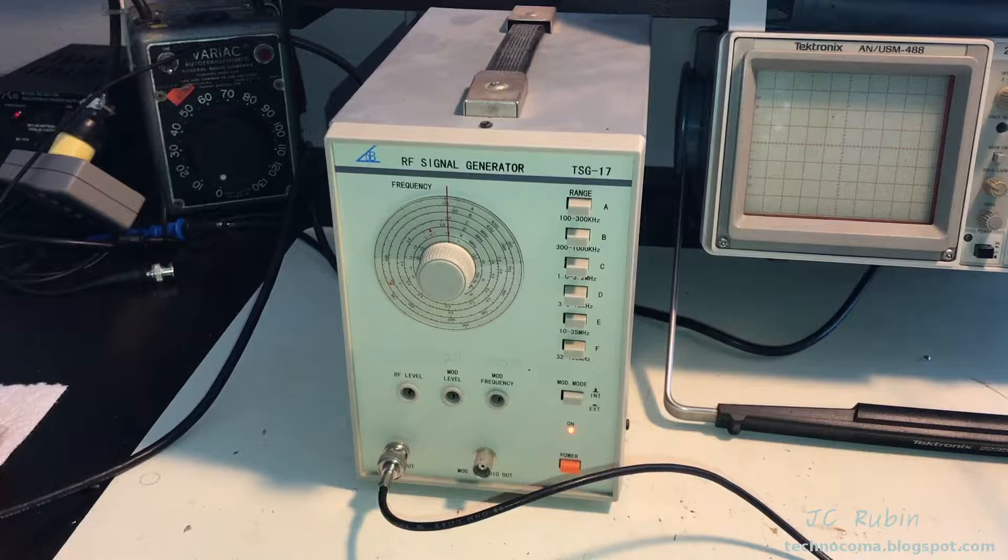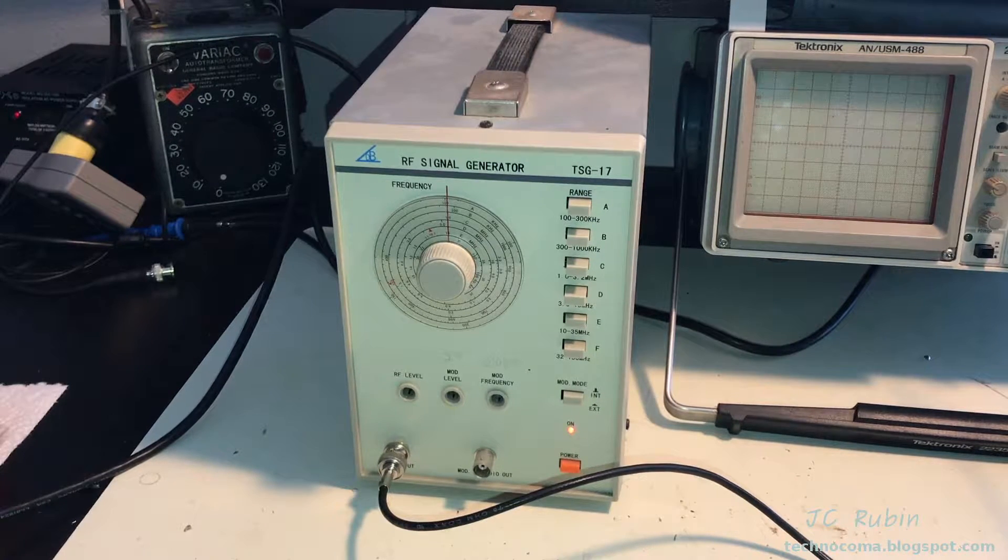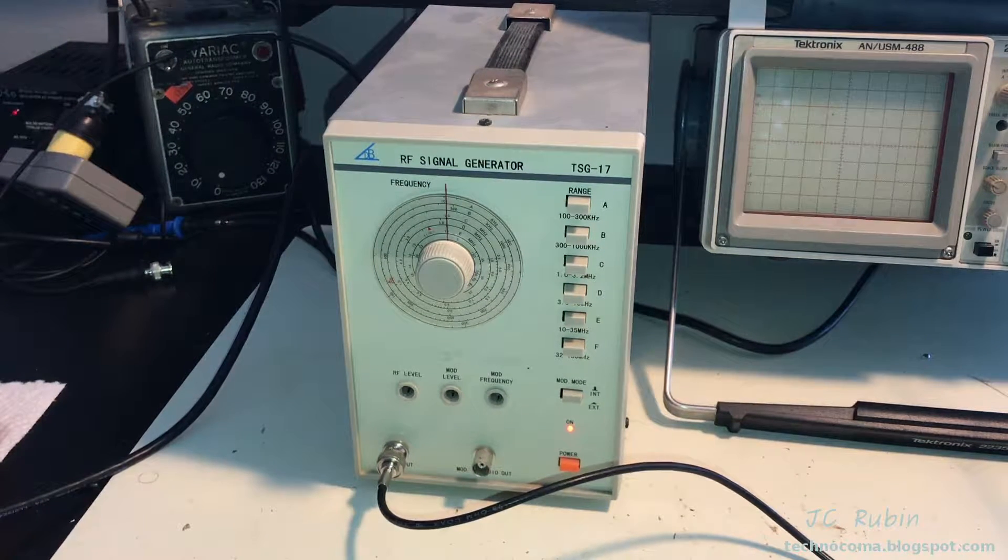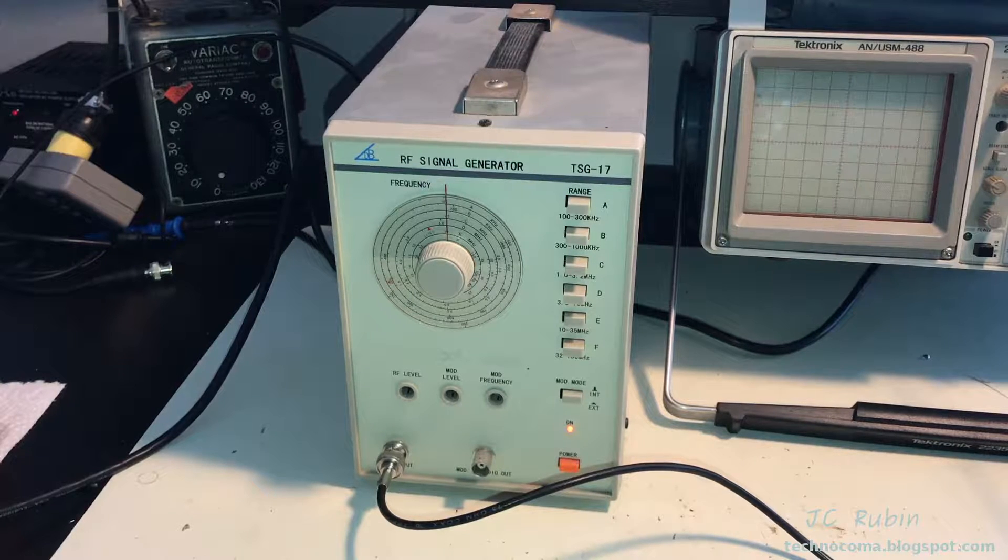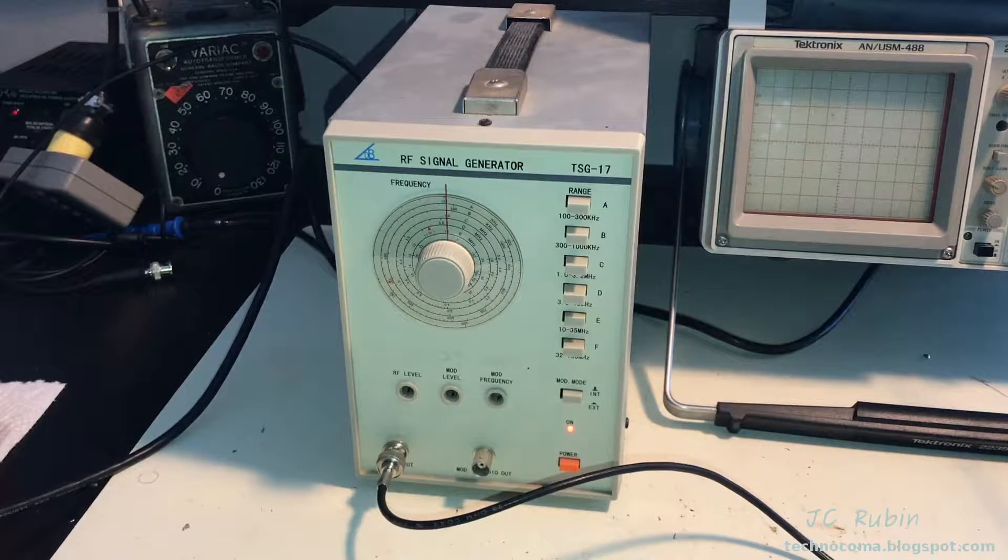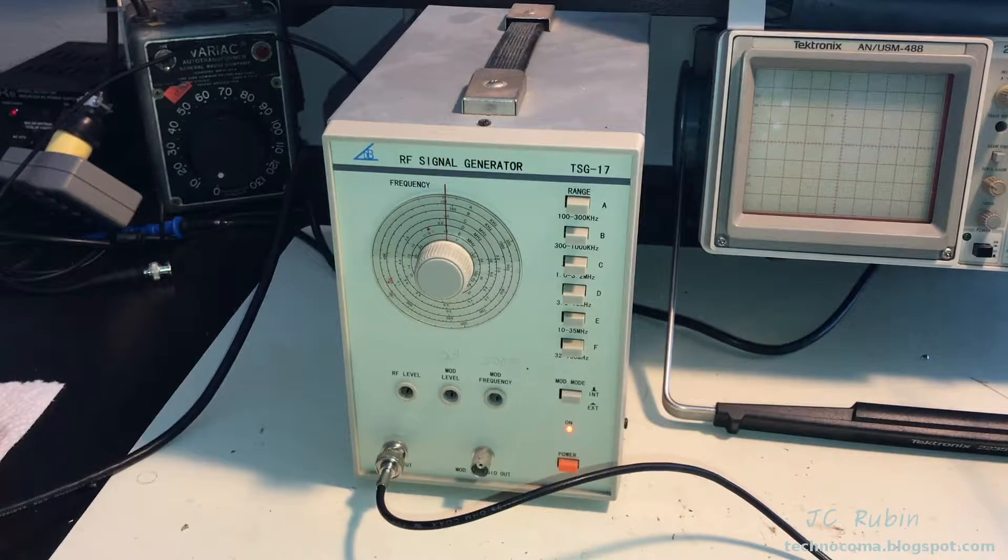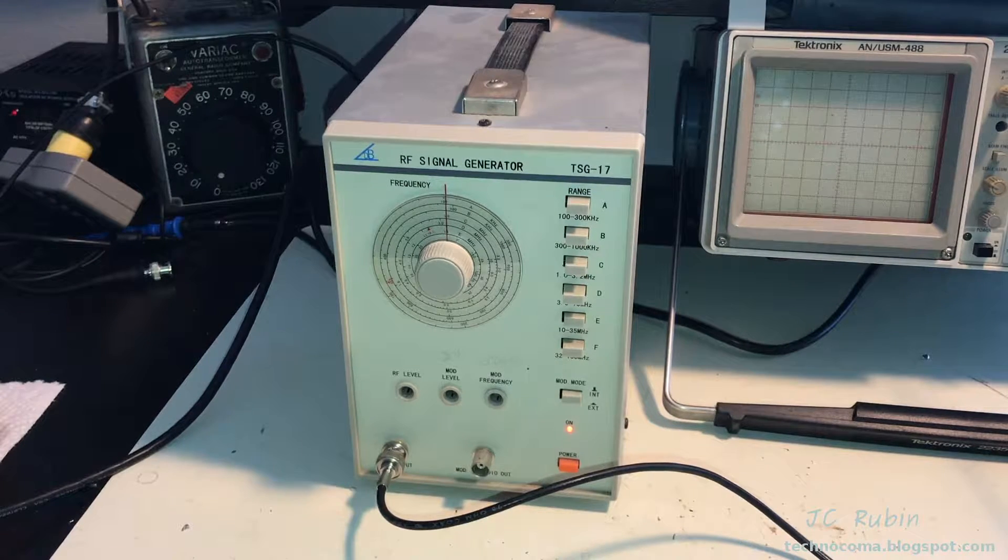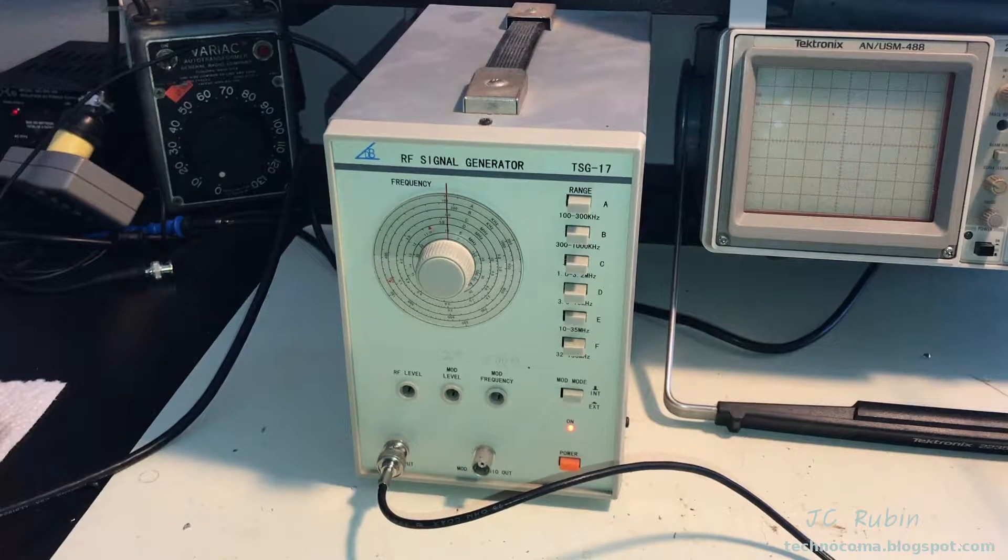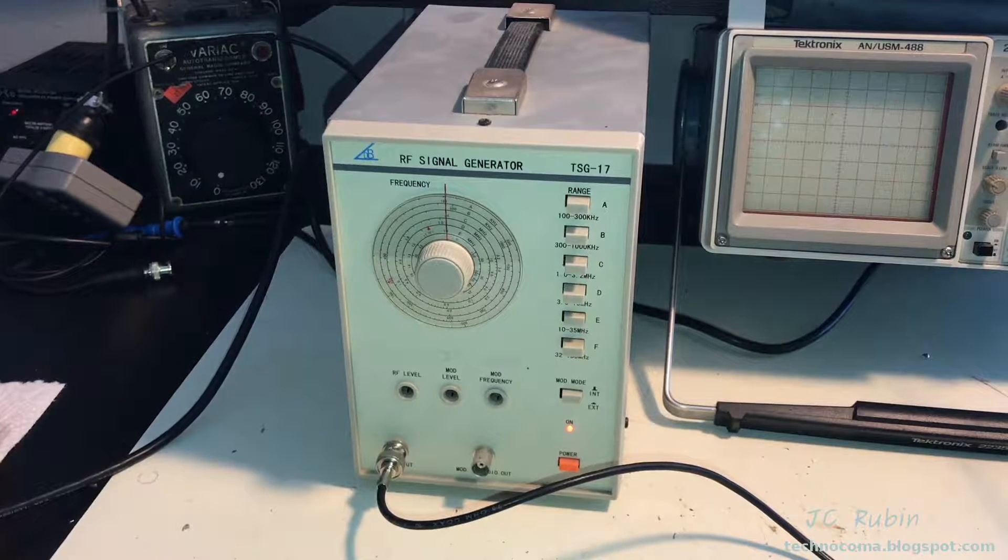Today we're going to be looking at the ever-popular TSG-17 RF signal generator. This is by request. This is a bottom-of-the-barrel, low-quality device that is used to generate a modulated waveform. It can also simply generate a sine wave if you shut off modulation in the frequency range that one would expect to find RF. It operates between 100 kilohertz all the way up to 150 megahertz.